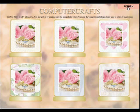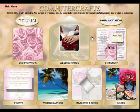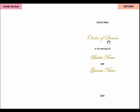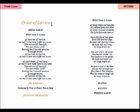Going back to our main menu — simply click return. We've got the wedding invitations, but we've also got the stationery section. If we click onto that, we now get save the date, RSVP, order of service, place names, menu, and a thank you note. If we go to order of service, you can see it's very simple — again text-editable, type in the details that you need. That's the outside section and then we have the inside section as well.